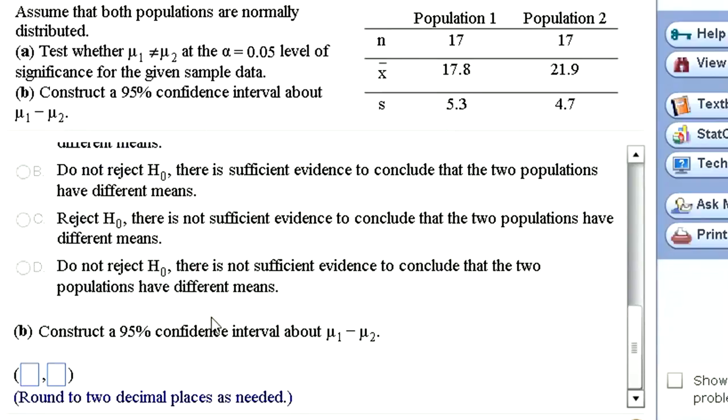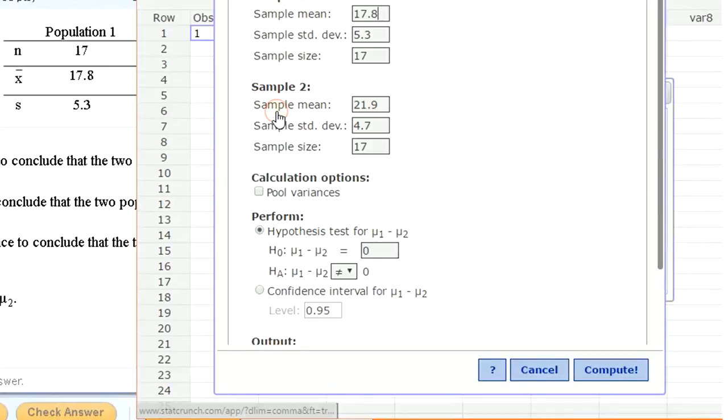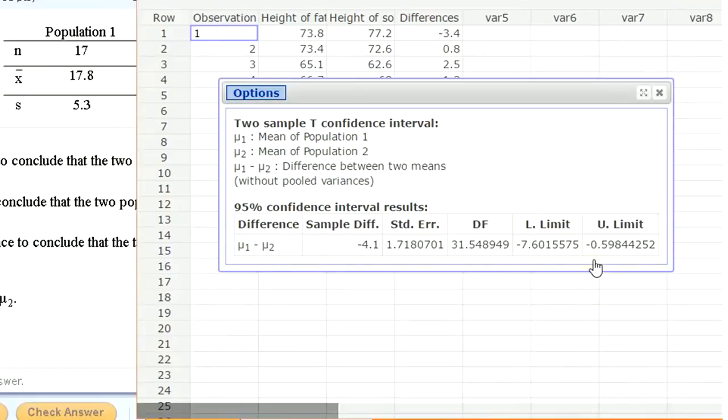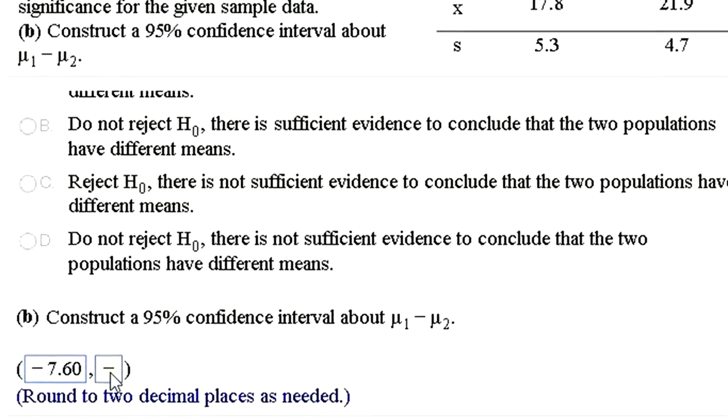Cool. And a 95% confidence interval. Well, we can just go back to here, edit, and change it from a hypothesis test to a confidence interval and click compute. And we get it there. So negative, let's see, two decimal places, negative 7.60 up to negative, I'll just type it in, negative 5.9. Let's round it up to negative 0.6. Great.